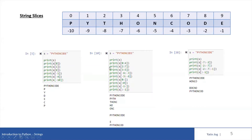Now look at the second output: print S with a slice starting from 2 till 7. Starting from 2 till 7, the output is t, h, o, n, c. For a slice from 3 to 5, only two characters will be printed: h, o. That is the output.